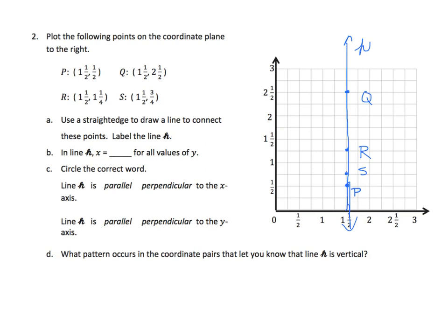So now, we've drawn that, and it says in line H, X equals what for all the values? Well, if I look at my ordered pairs here, in every case, X is 1½.